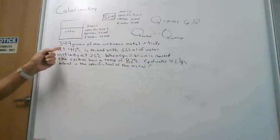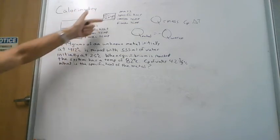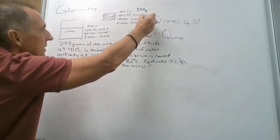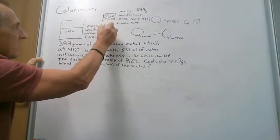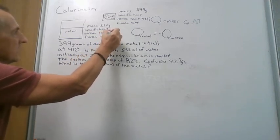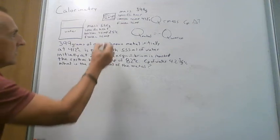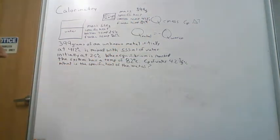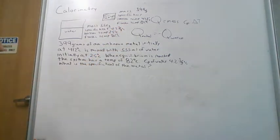In a typical calorimetry problem like this one, we take 399 grams of an unknown metal initially at 412 degrees Celsius, and mix it with 555 milliliters of water. Since the density of water is one gram per milliliter, that's 555 grams of water initially at 25 degrees Celsius. When equilibrium is reached, the system temperature is 82 degrees Celsius — the final temperature of both the water and the metal. The specific heat of water is 4.2 joules per gram per degree Celsius. What is the specific heat of the metal?